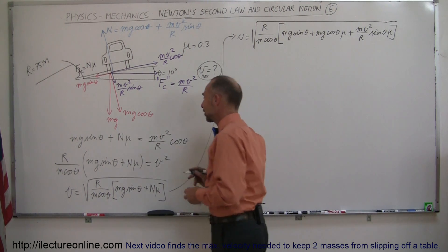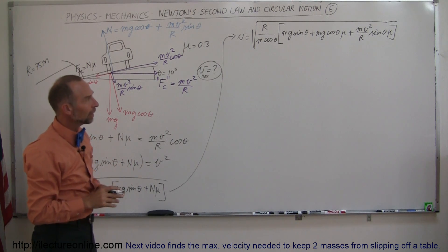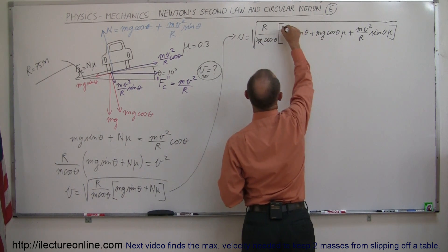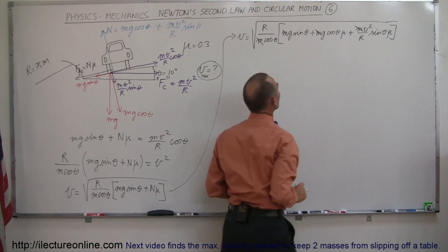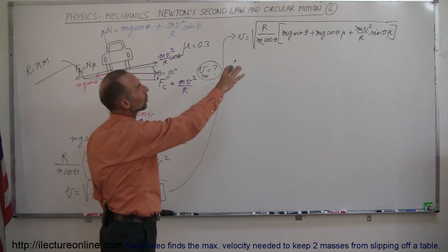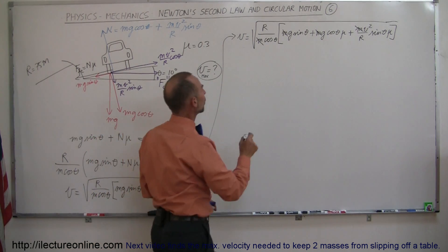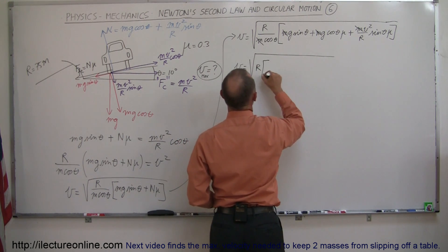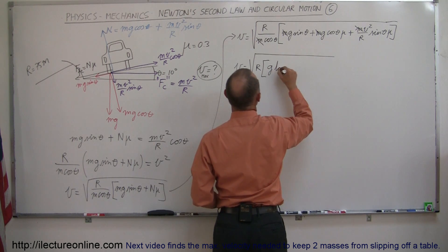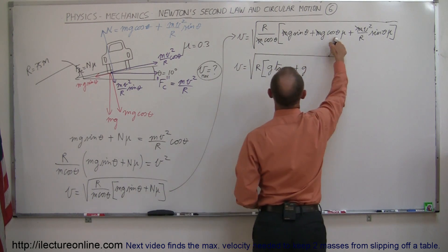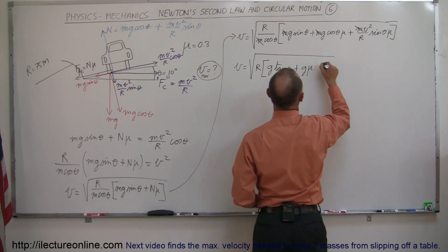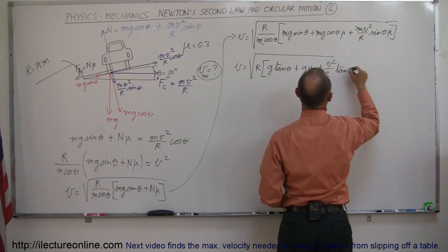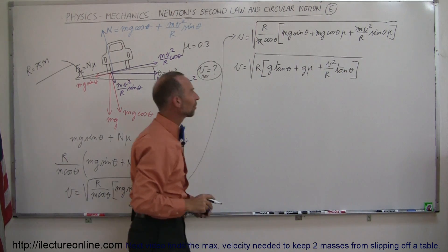Now we can simplify. The m in the denominator cancels with the m in each of the three terms. Then dividing cosine theta into each term: sine over cosine is tangent theta, cosine over cosine is 1, giving g times mu, and the last term gives v²/R times tangent theta times mu. So V equals the square root of R times g times tangent theta, plus g times mu, plus v²/R times tangent theta times mu.